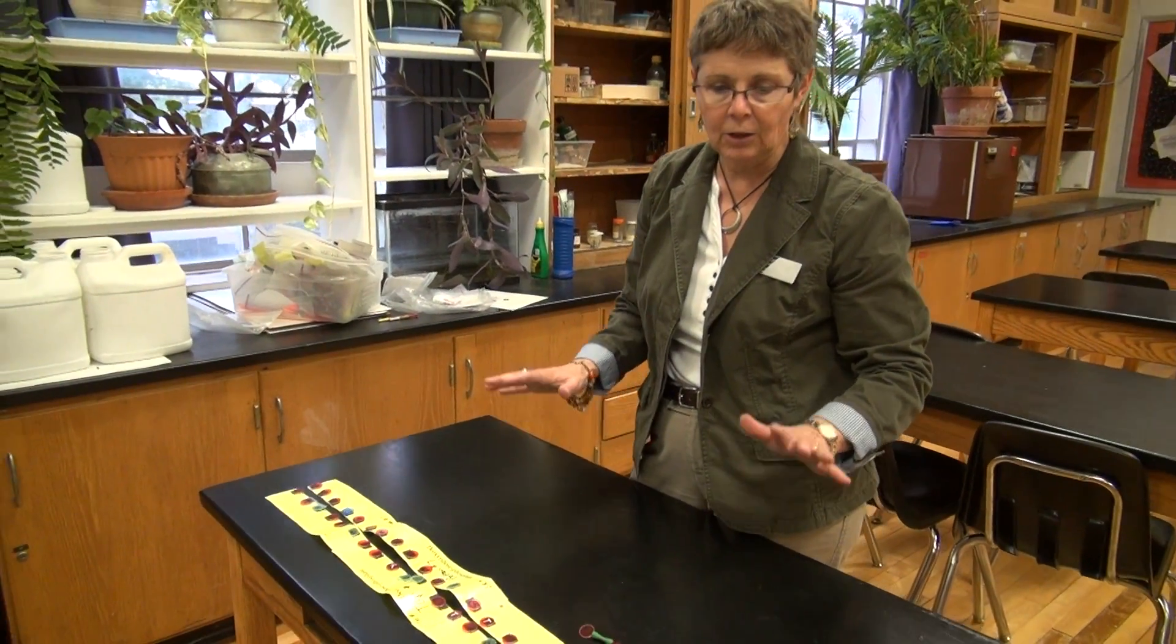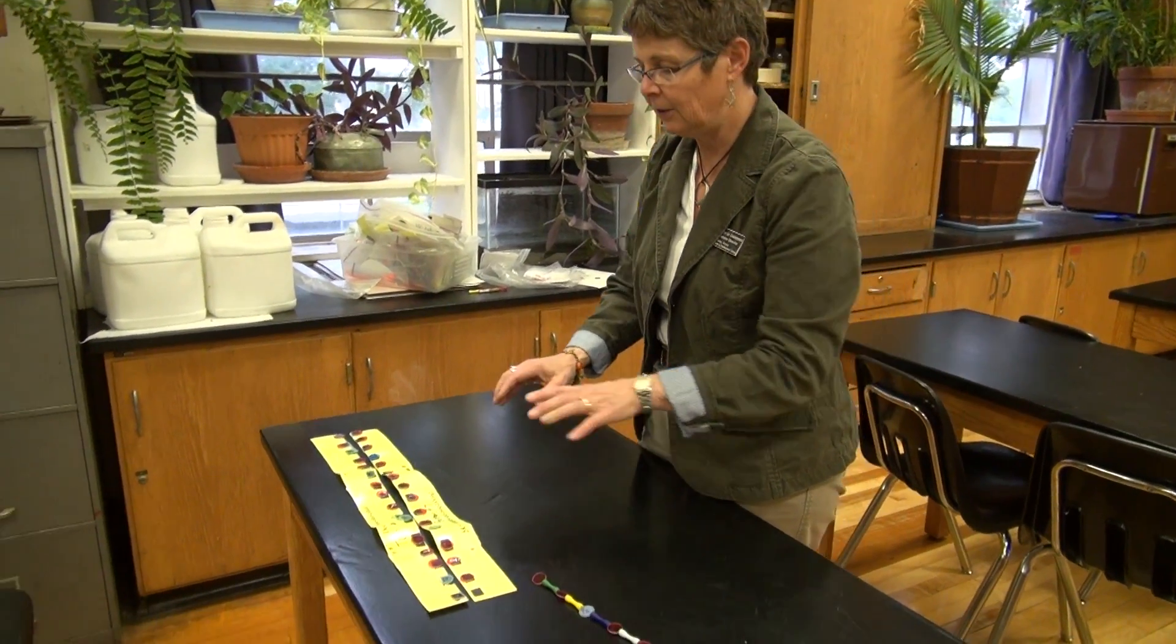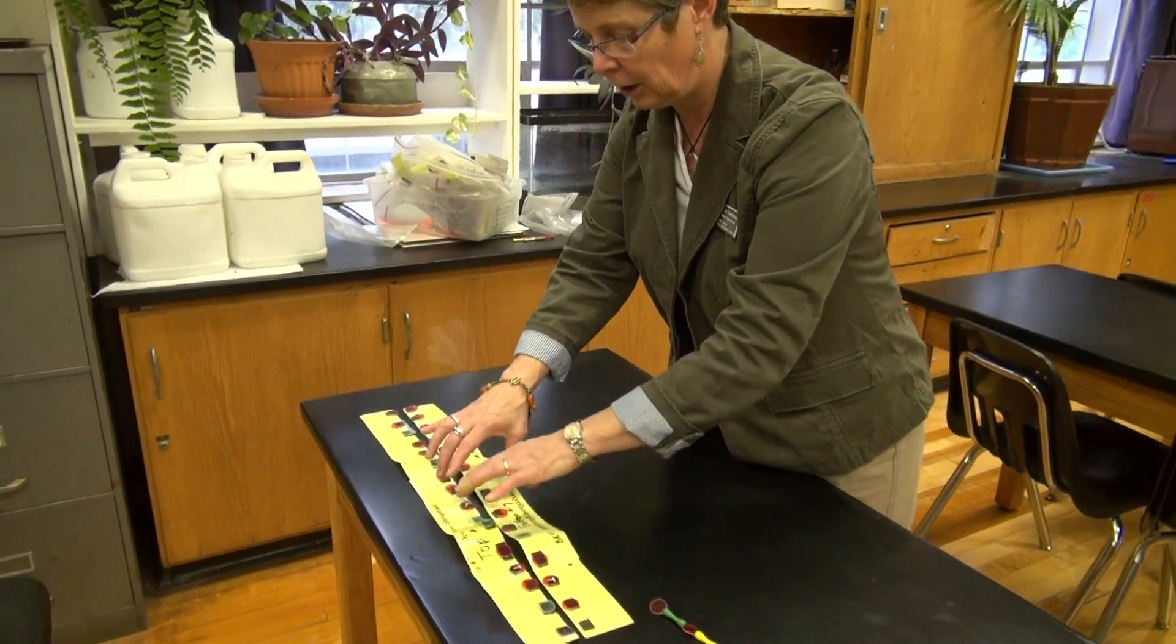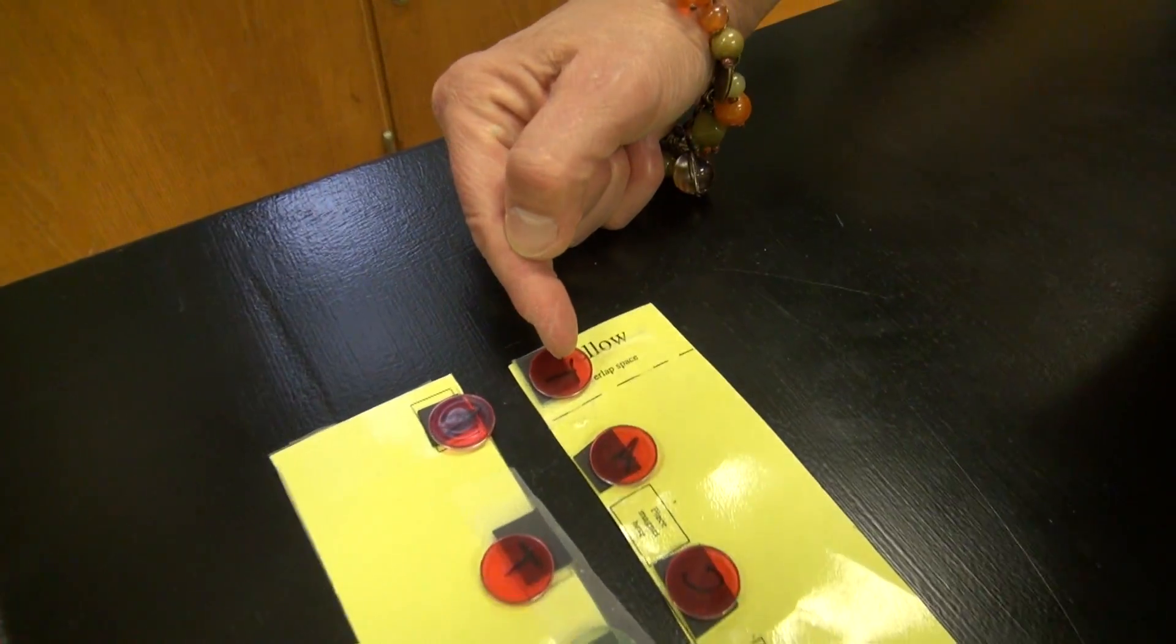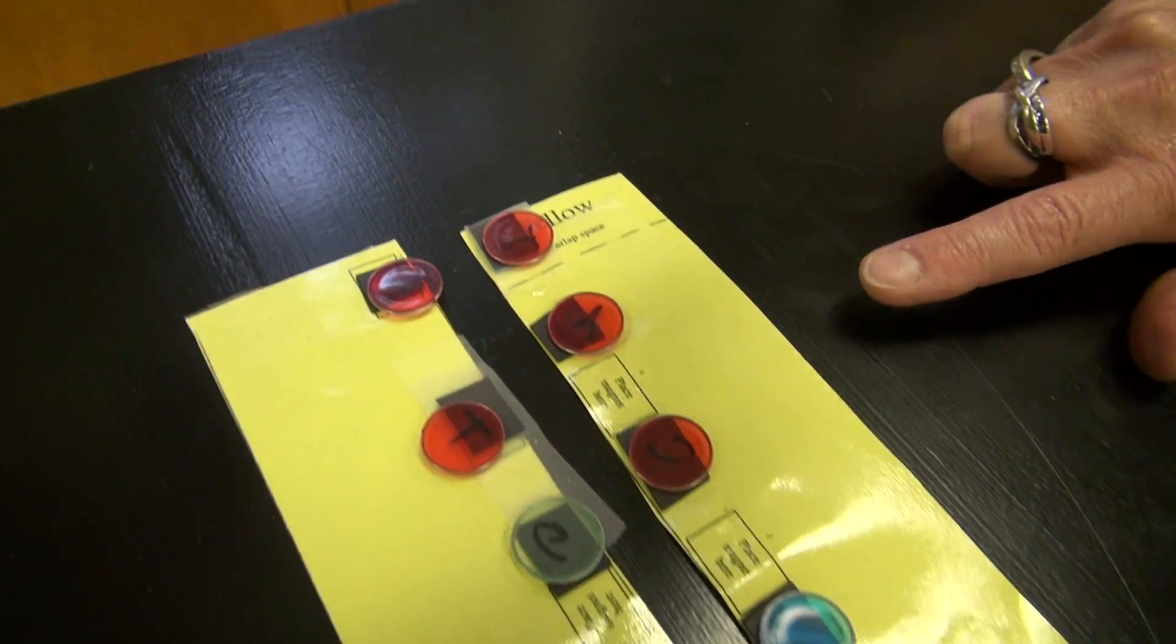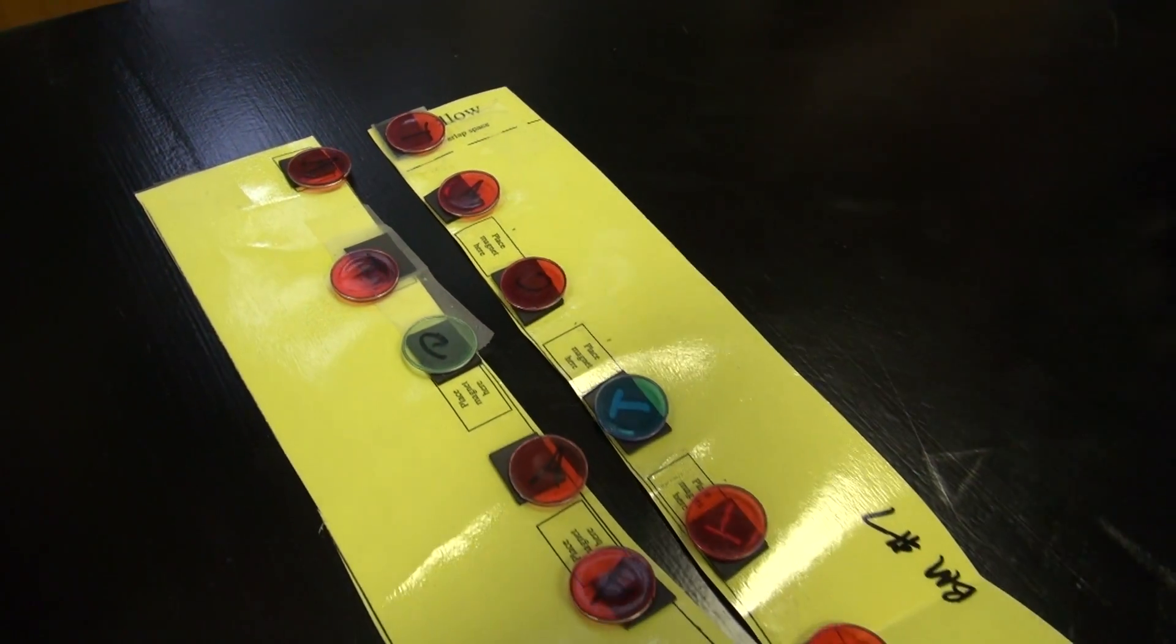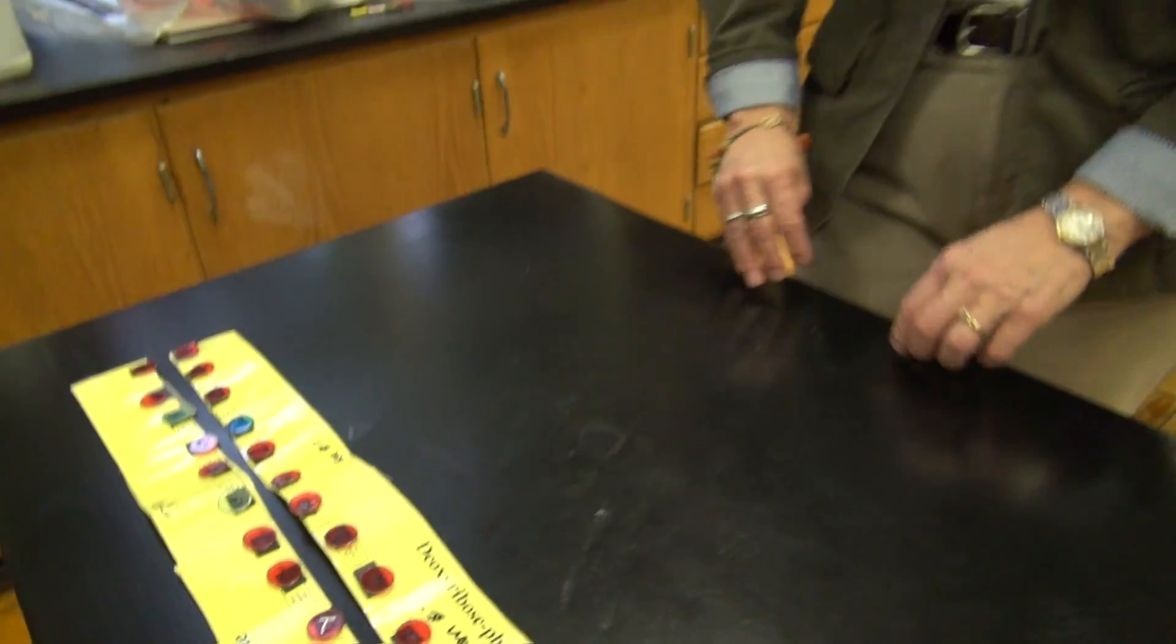A need in a cell for a protein arises, and this section of DNA, this is a complementary strand of DNA. You can see that thymine pairs with adenine, and cytosine pairs with guanine. Those pairs are always the same.